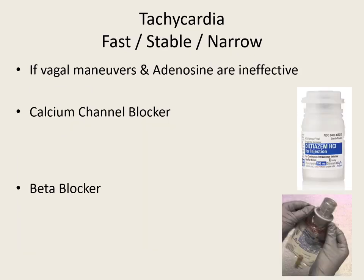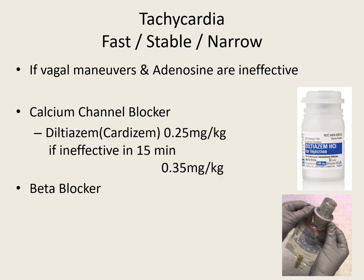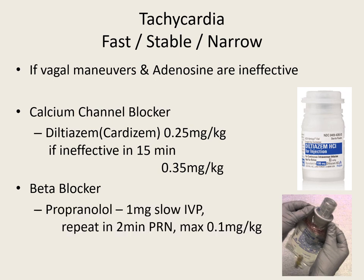If our first two treatments don't work, then we consider a calcium channel blocker or a beta blocker. Our calcium channel blocker is Cardizem. The first dose is 0.25 mg per kg. If that doesn't work in 15 minutes, we're going to try 0.35 mg per kg. If we don't have Cardizem, then we try a beta blocker — Propranolol: 1 mg slow IV push, repeated in two minutes as needed up to a max of 0.1 mg per kg.